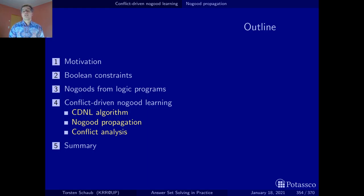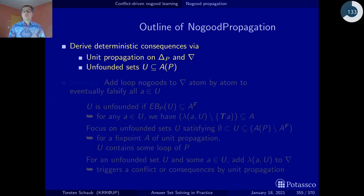Now that we have seen how we can search for stable models via conflict-driven no-good learning, let's look at the underlying algorithms and first of all at no-good propagation. The purpose of no-good propagation is to determine deterministic consequences either via unit propagation on the completion no-goods and the dynamic no-goods, or by detecting unfounded sets.